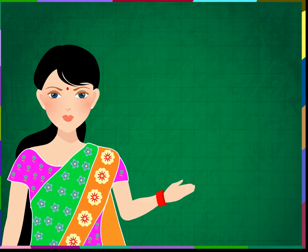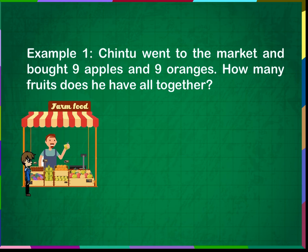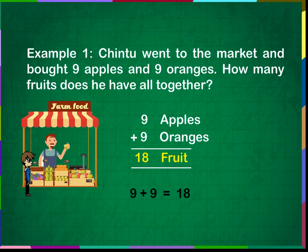Let us see word problems and solve them by addition. Example 1: Chintu went to the market and bought 9 apples and 9 oranges. How many fruits does he have altogether? 9 apples and 9 oranges make 18 fruits. 9 plus 9 is equal to 18. Chintu has 18 fruits altogether.